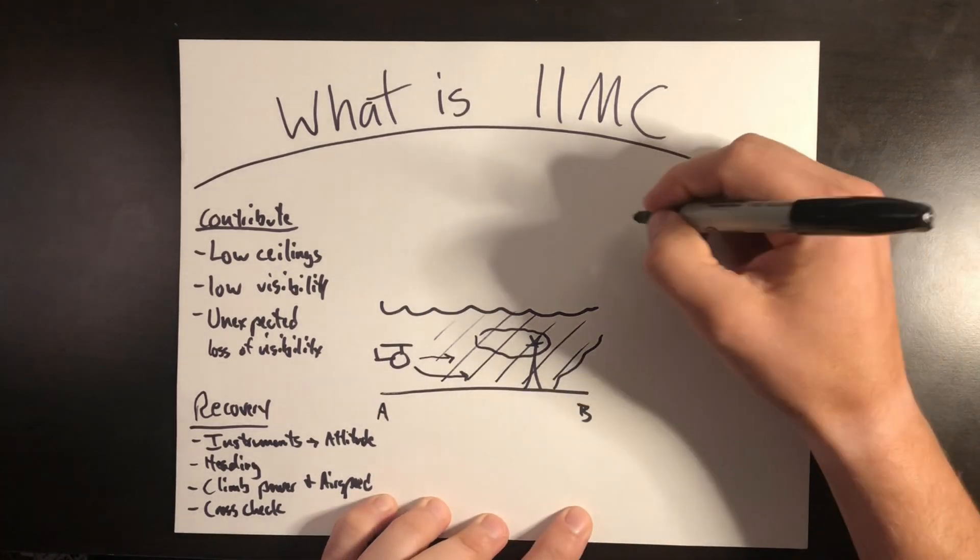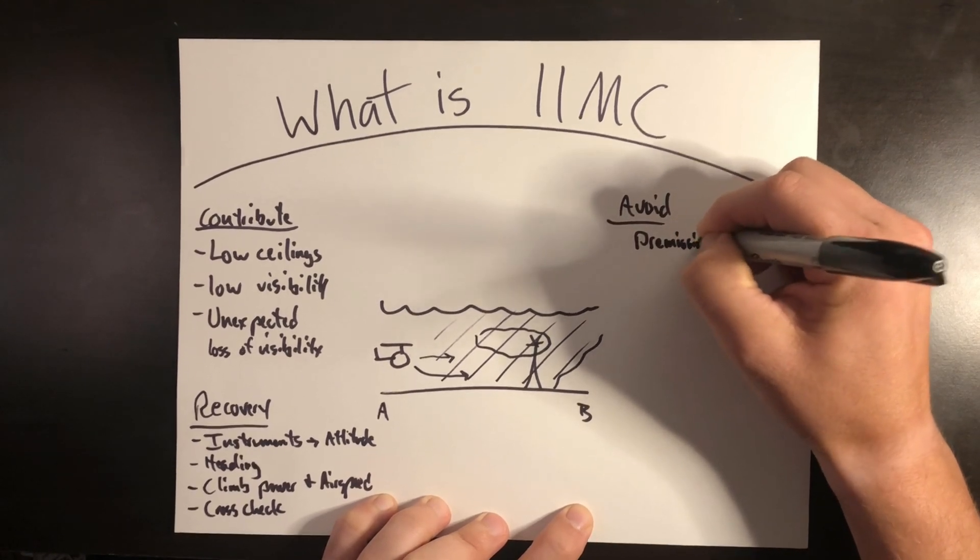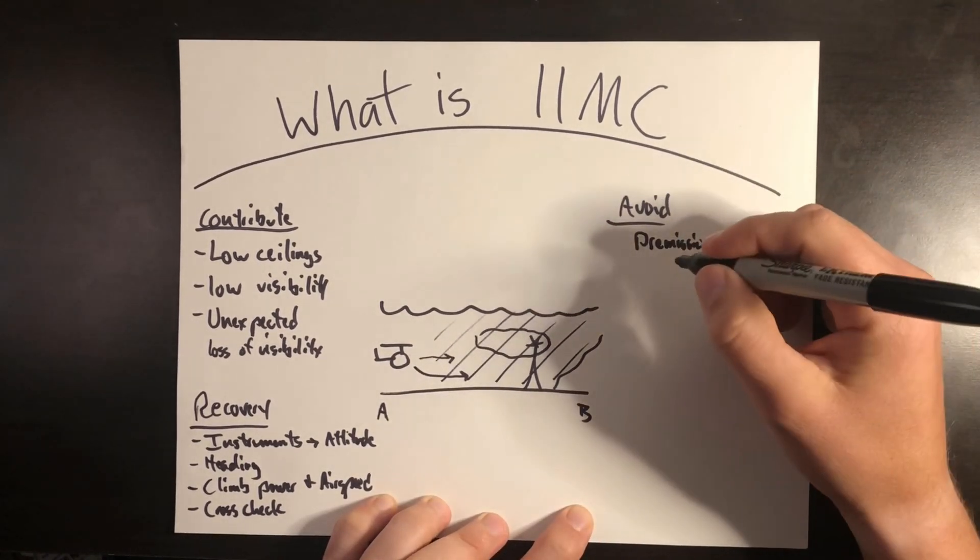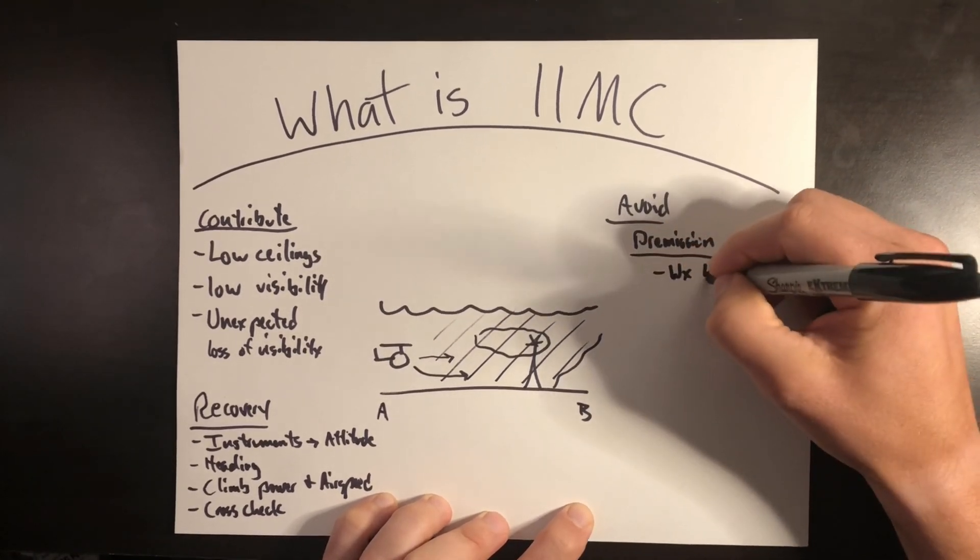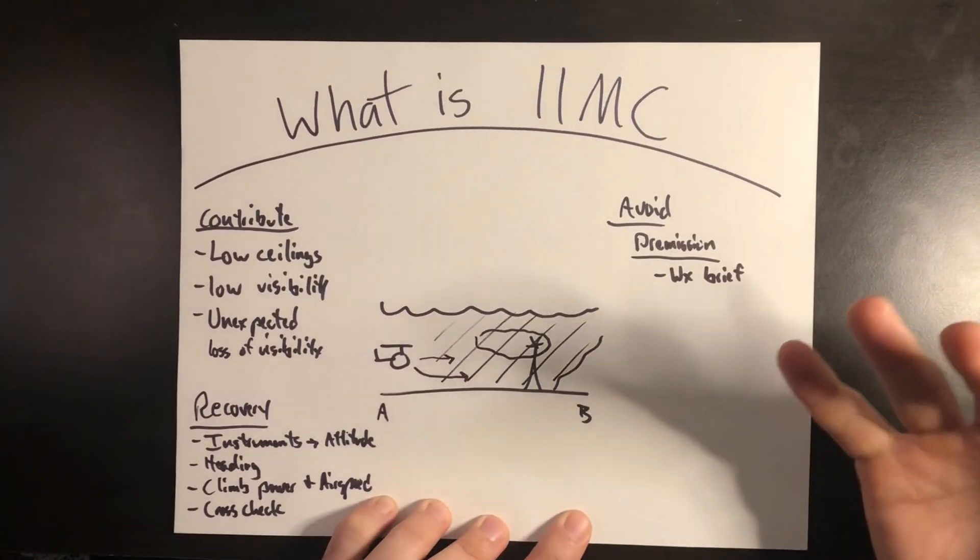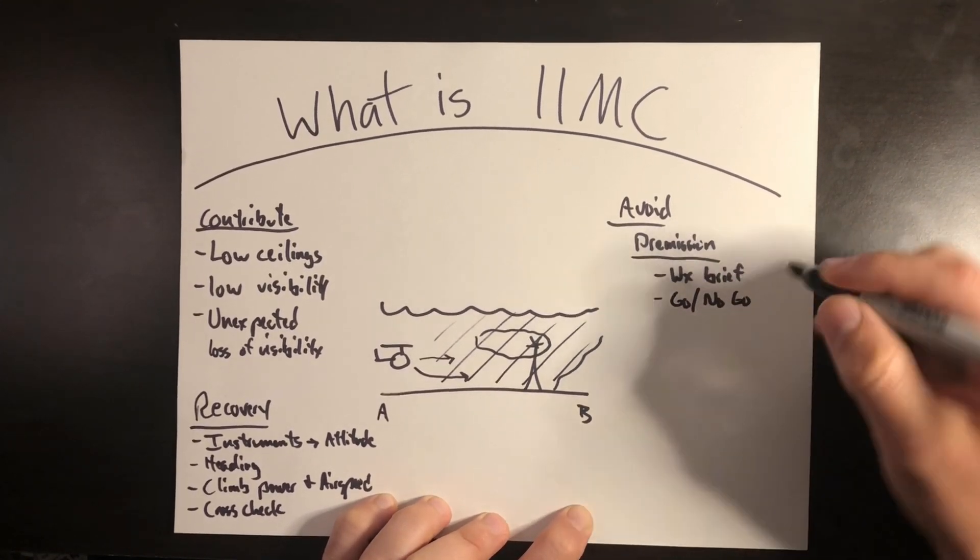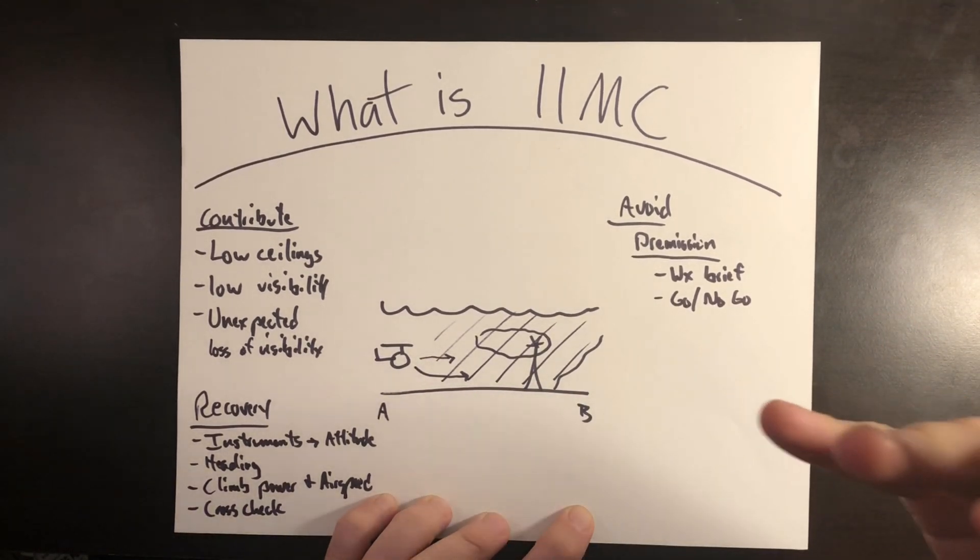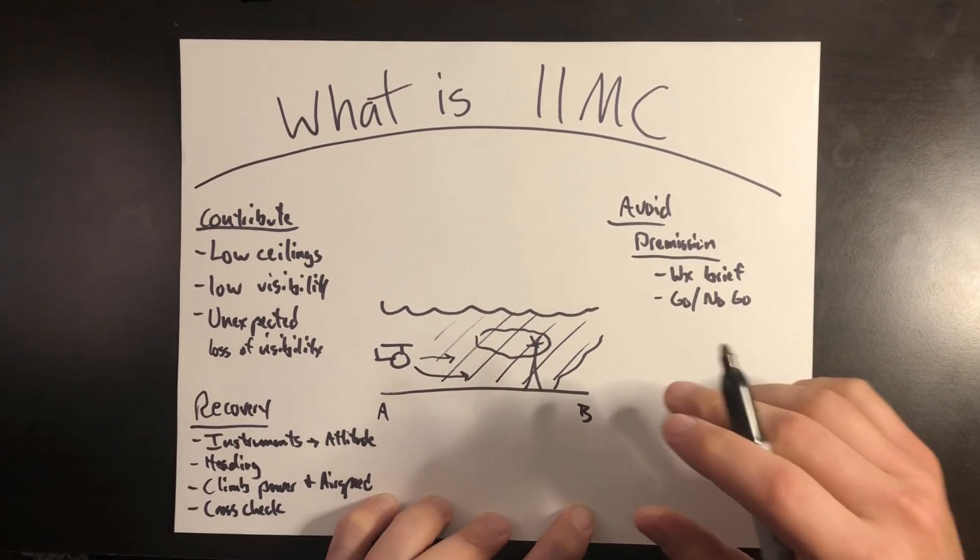So there's a few ways that we can avoid inadvertent IMC. First one being in the pre-mission or the planning phase. So establish before I even fly what the weather is going to be. So preferably get a weather brief at the takeoff place, the landing place and anything in route. I want to know what the weather is going to be. And then I want to establish some sort of go or no-go criteria. Hey, if the visibility is less than two miles, I'm not going to go. Or if its ceiling is less than 800 feet, I'm not going to go because I need to go through the mountain pass. But establish some sort of minimum criteria that you will or won't even launch for.